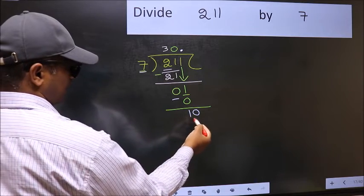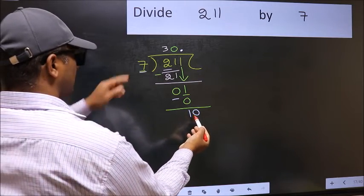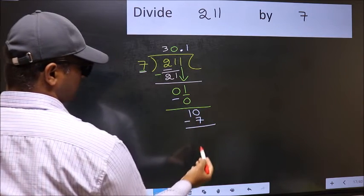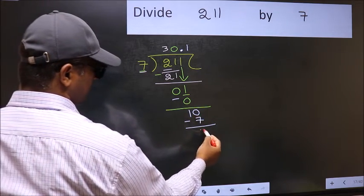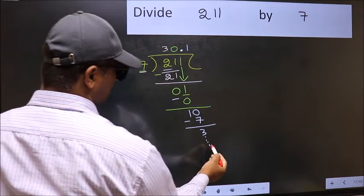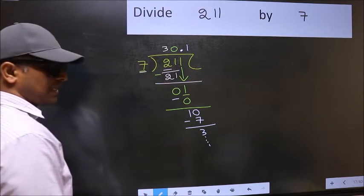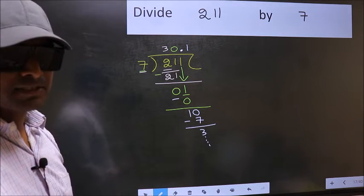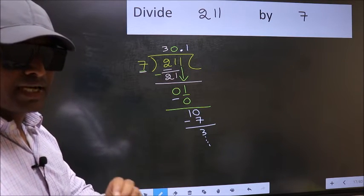So now you can put dot and take 0. So 10. A number close to 10 in the 7 table is, 7 once 7. Now you subtract, 10 minus 7, 3, and continue the division. I am not doing that. Did you understand where the mistake happens? You should not do that mistake.